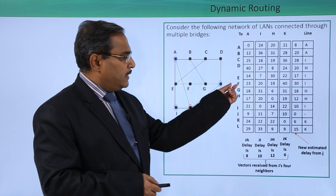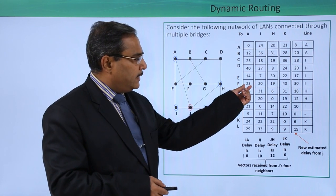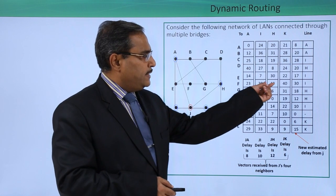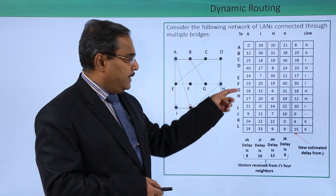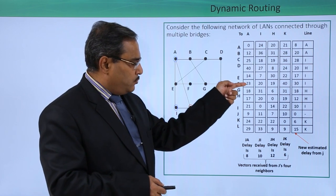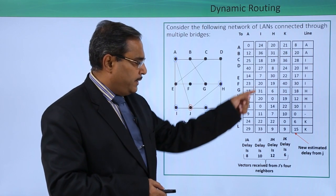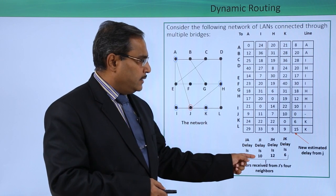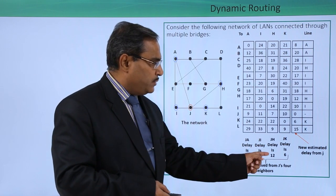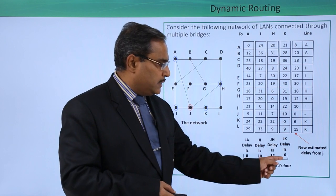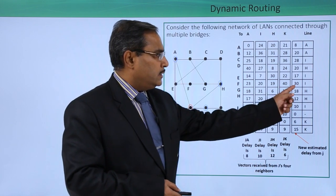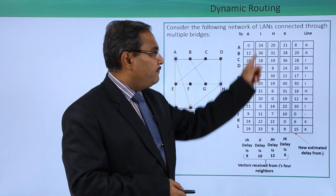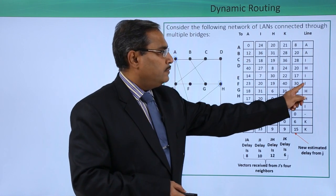Just consider F here. You can find that out of 23, 20, 19, and 40, 19 is the minimum, but it is not getting calculated that way. It is getting calculated as: 23 plus 8 is 31, 20 plus 10 is 30, 29 plus 12 is 31, 40 plus 6 is 46. What is the minimum one? That is 30. So 30 is the delay and travel through I bridge.